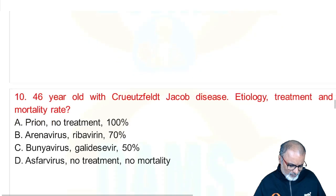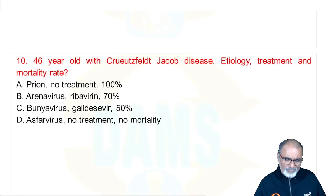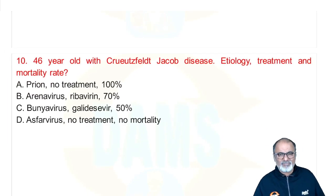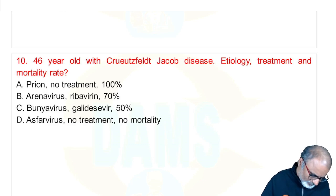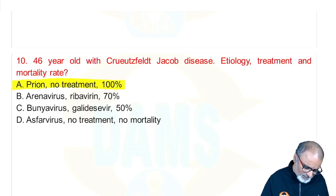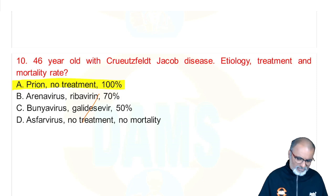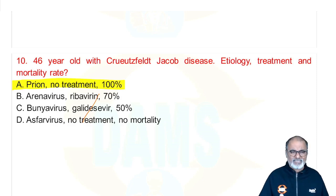Next: a 46-year-old with Creutzfeldt-Jakob disease — etiology, treatment, and mortality. It is a prion-based disease — misfolding of protein. 100% fatality, no treatment. It is not due to a virus; it is due to misfolding of proteins. CJD is a prion-based disease.